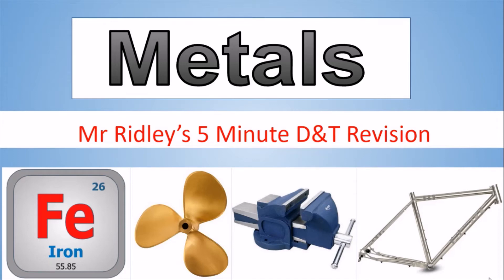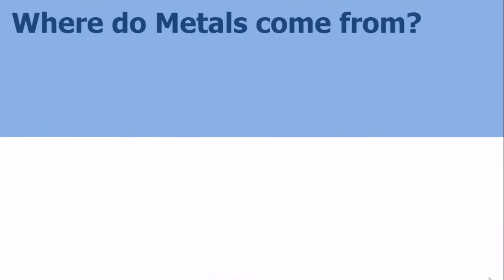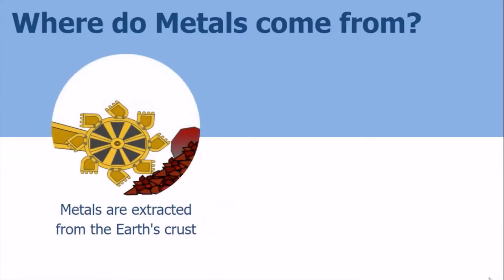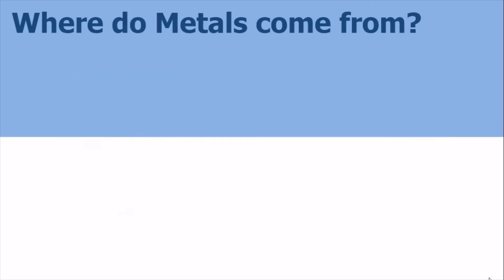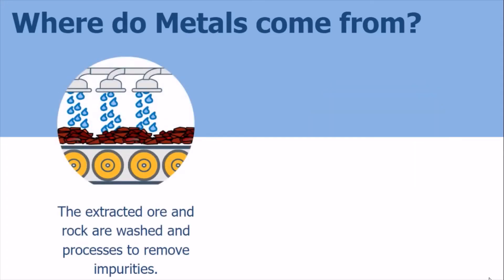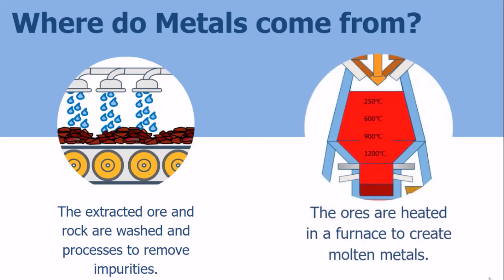Hello and welcome to Mr Ridley's five minute D&T revision, and this is metals. Where do metals come from? Metals are extracted from the earth's crust. The extracted materials are called ores. The extracted ore and rock are washed and processed to remove impurities. The ores are heated in a furnace to create molten metals.